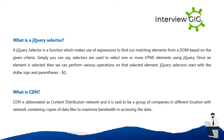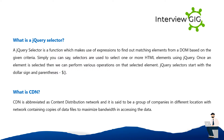Simply put, selectors are used to select one or more HTML elements using jQuery. Once an element is selected, you can perform various operations on it. jQuery selectors start with the dollar sign and parentheses: $(). What is CDN? CDN is abbreviated as Content Distribution Network.